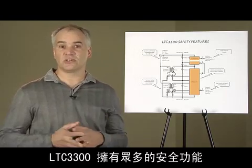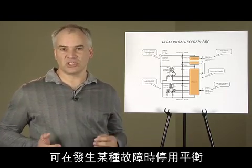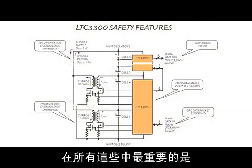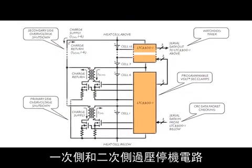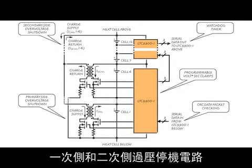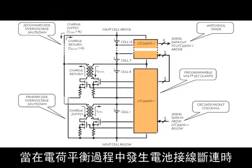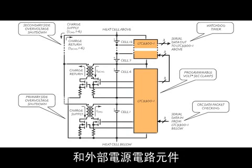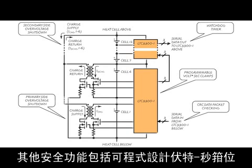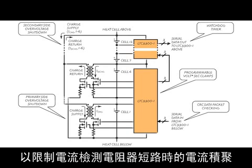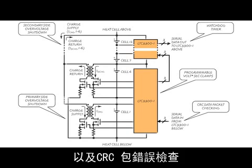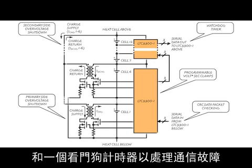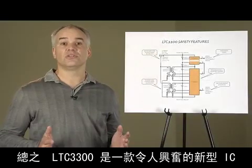The LTC 3300 contains numerous safety features which disable balancing in the event of a fault. Most important among these are the primary and secondary side overvoltage shutdown circuits, which protect both the LTC 3300 and the external power circuit components in the event of a broken connection to a battery while balancing. Other safety features include programmable volt-second clamps to limit current buildup in the event of a shorted current-sense resistor, and both CRC packet checking and a watchdog timer to handle communication faults.